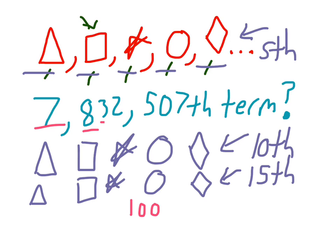We also know that 7,832,505 is divisible by five, because everything that ends in five or zero is divisible by five. Therefore, the 7,832,505 term is going to be the diamond. The 506th term is going to be the triangle. And boom! The last one is going to be the square.